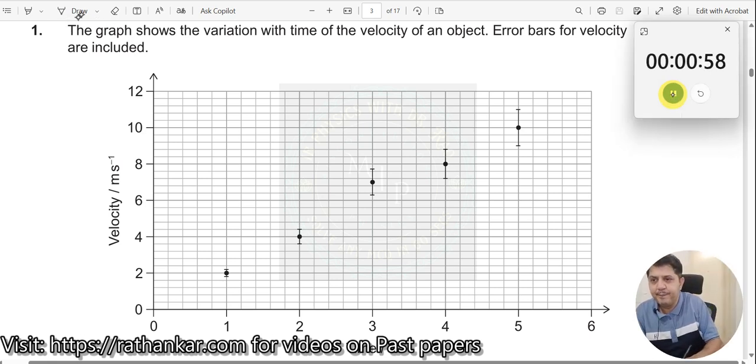Okay. Question number 1. Right. Now, the graph shows the variation with time t of the velocity v of an object. Error bars for the velocity are included. So, a v-t graph is shown with error bars.